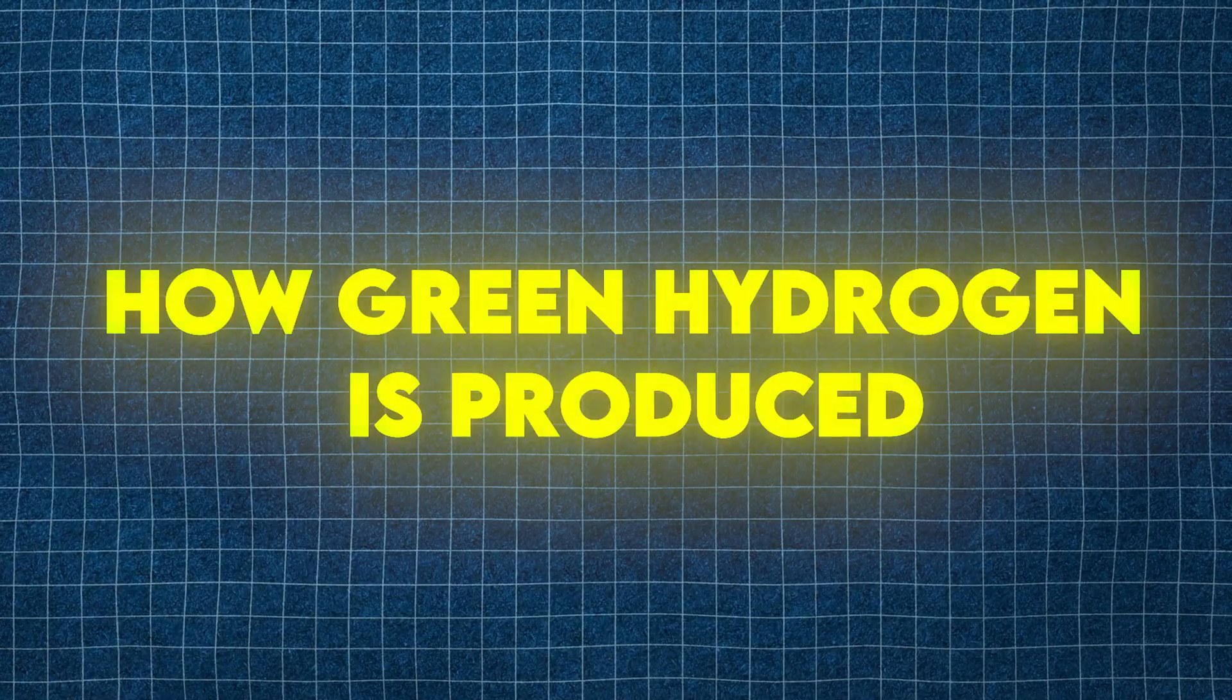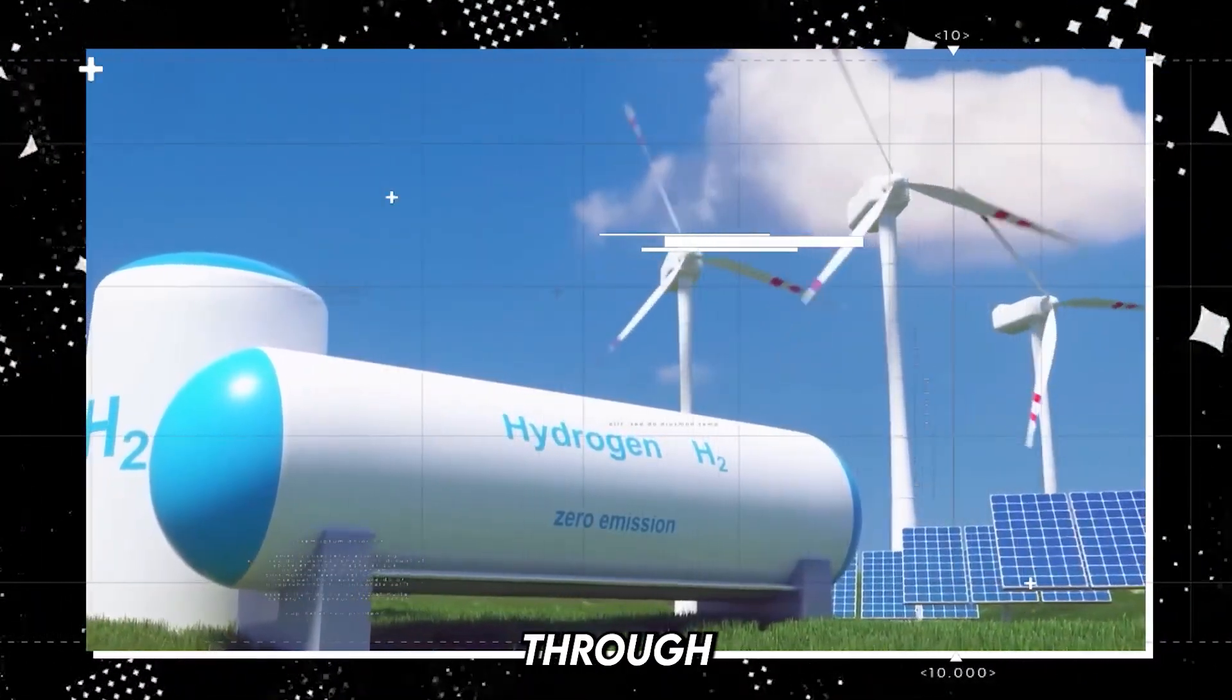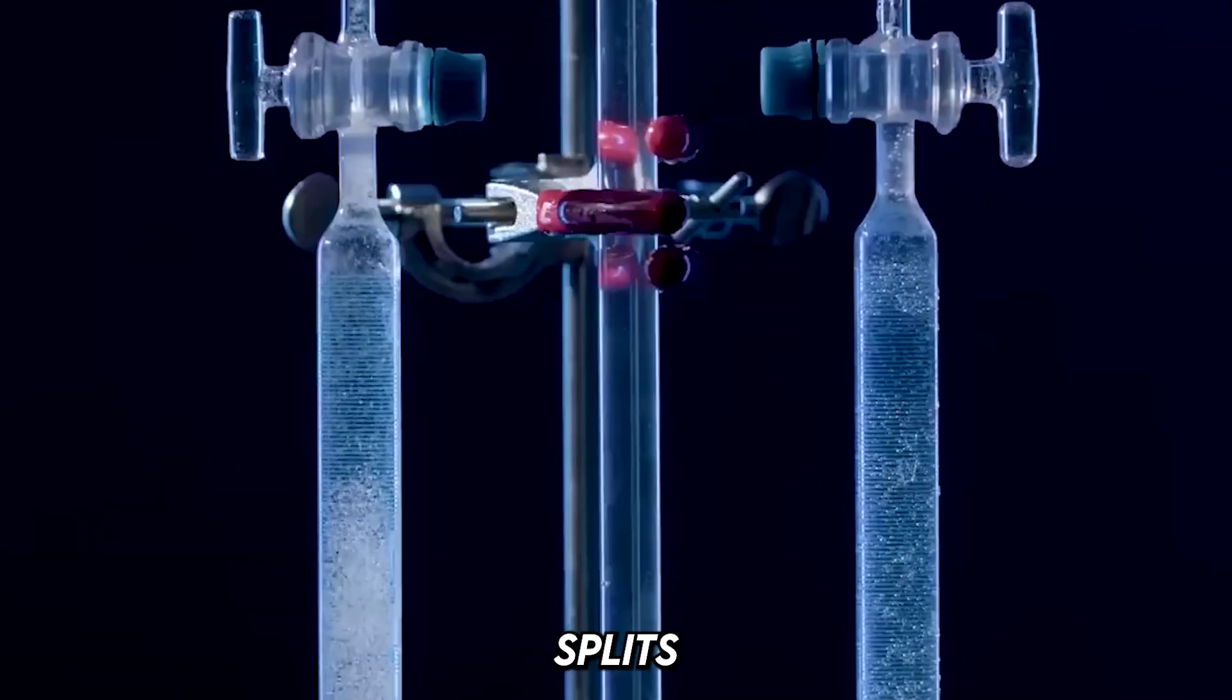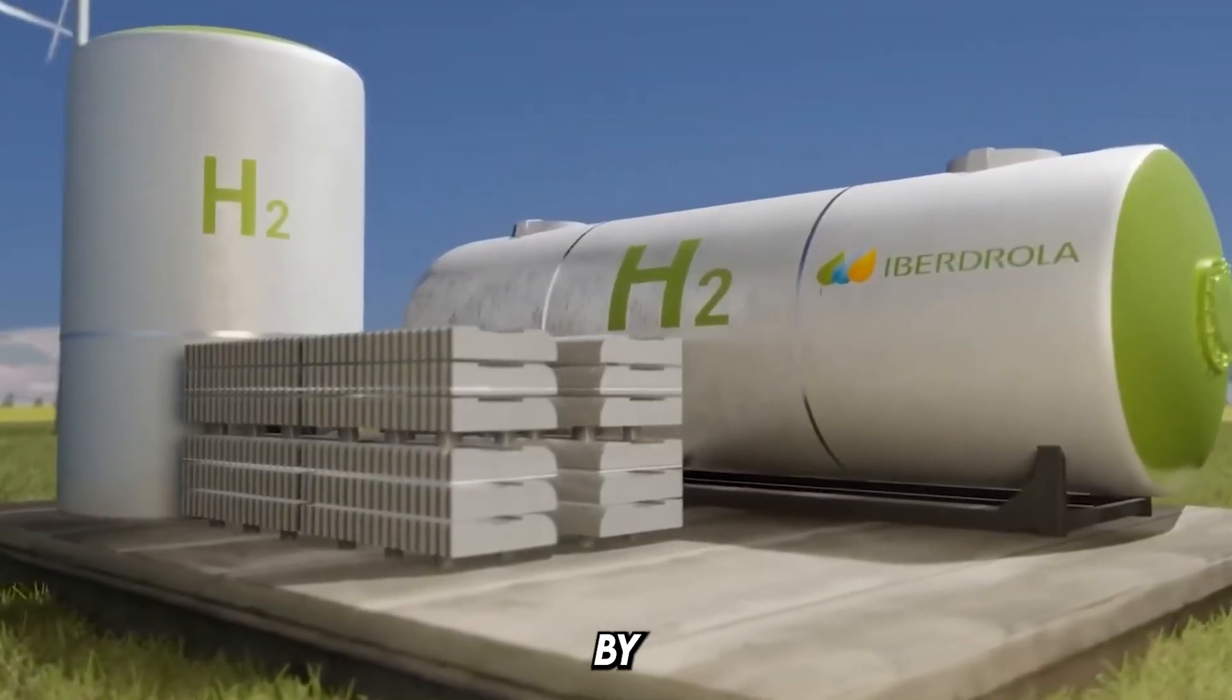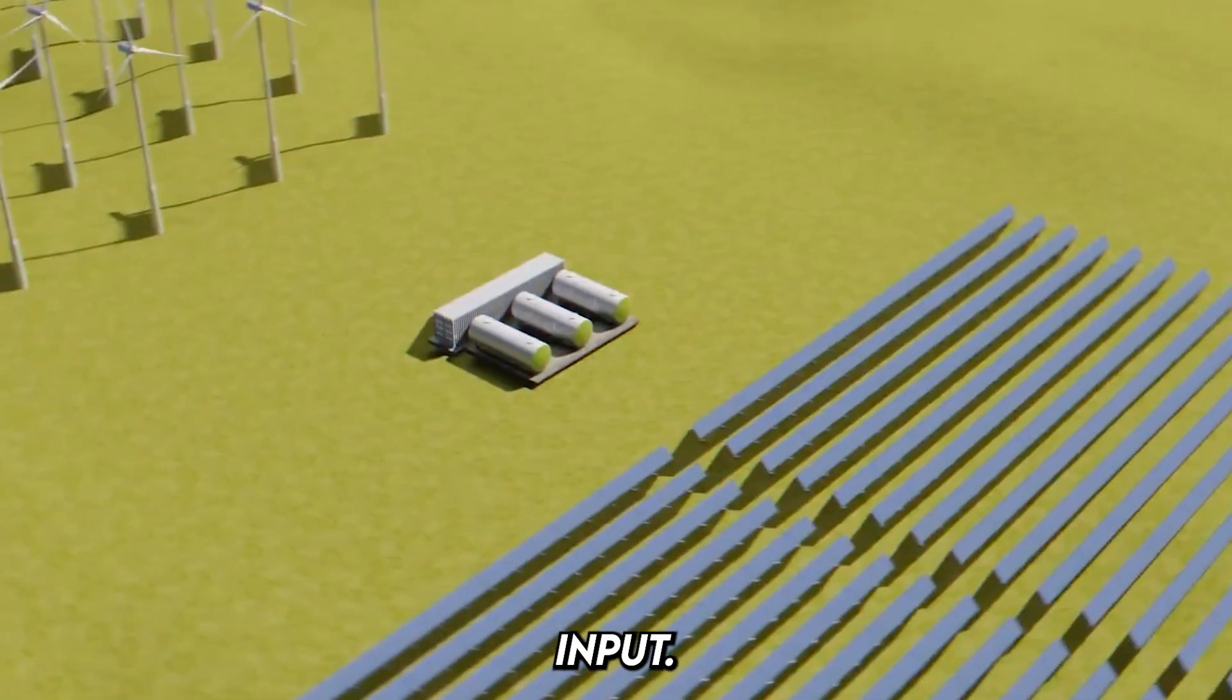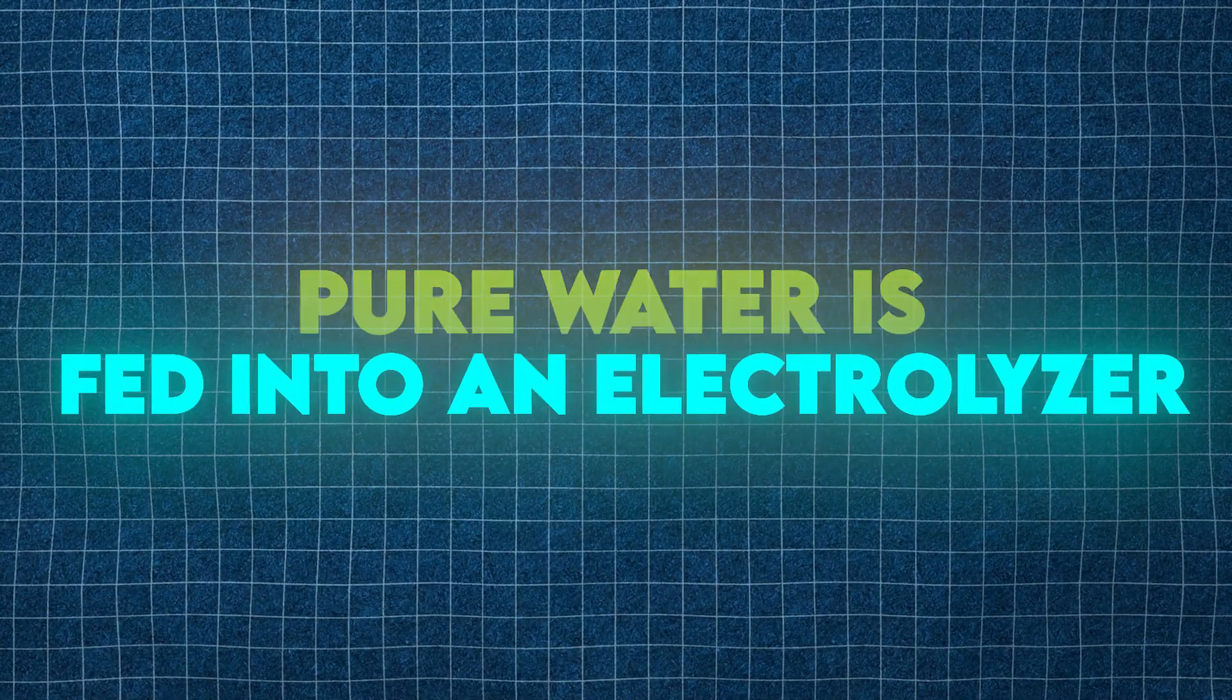How green hydrogen is produced: Green hydrogen is created through electrolysis, a process that splits water into hydrogen and oxygen using electricity. Here's a step-by-step breakdown. Water input: Pure water is fed into an electrolyzer.